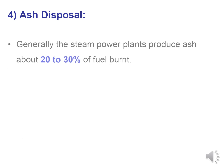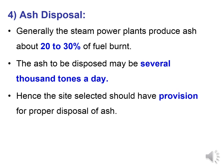Ash disposal is very important. Steam power plants produce ash about 20 to 30 percent of the fuel burnt. If we burn 100 kg of fuel, around 20 to 30 kg of ash is generated. The ash to be disposed may be several thousand tons per day, so the site selected should have provision for proper disposal of ash.